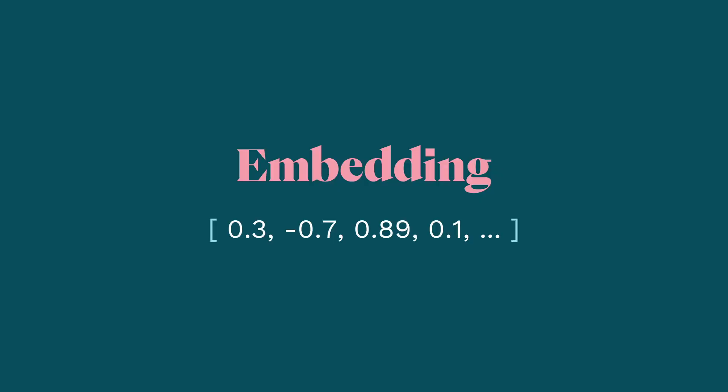Vectors are arrays of numbers, and when those arrays represent something, we call them embeddings. The term vector really just refers to the mathematical concept, whereas embedding is kind of like an applied vector, if you will.